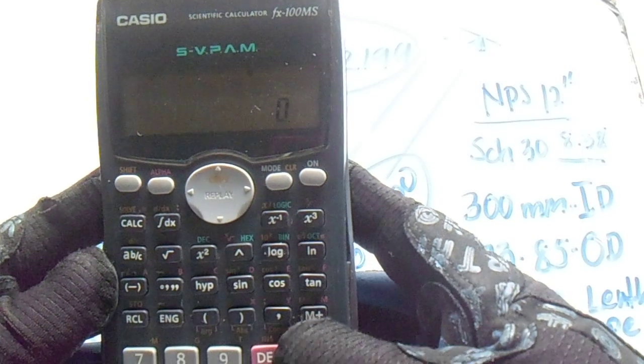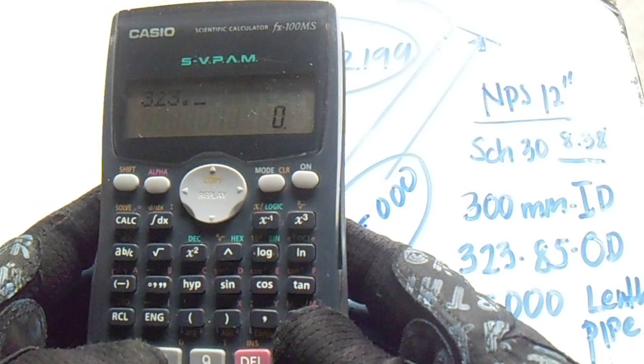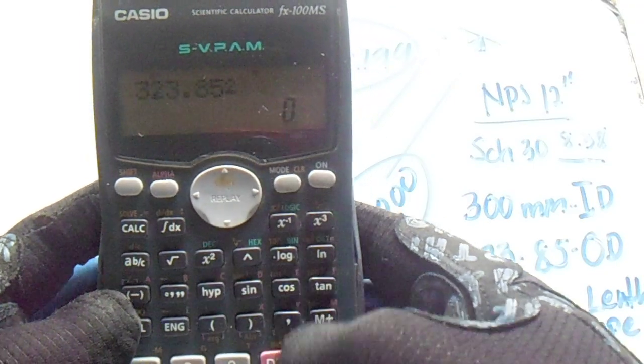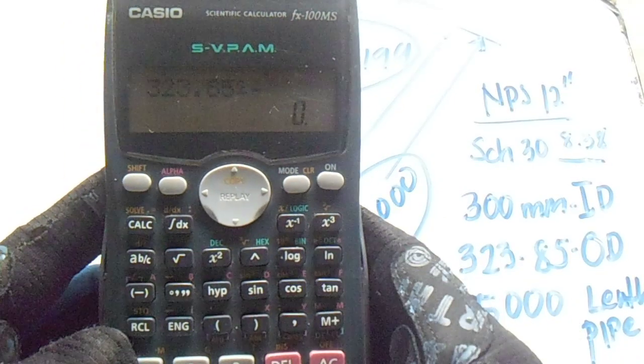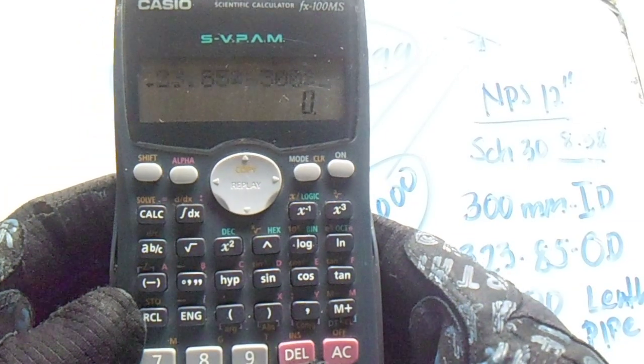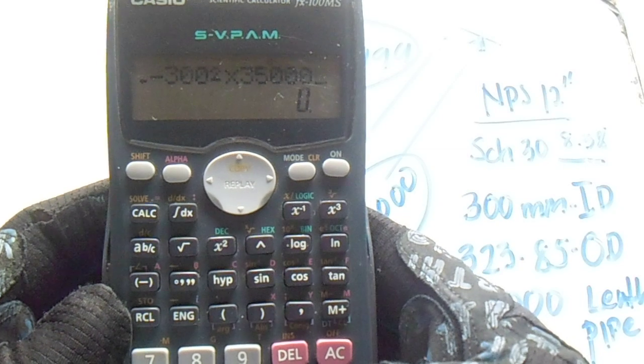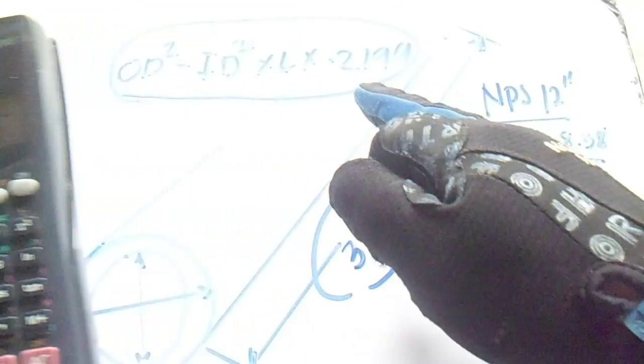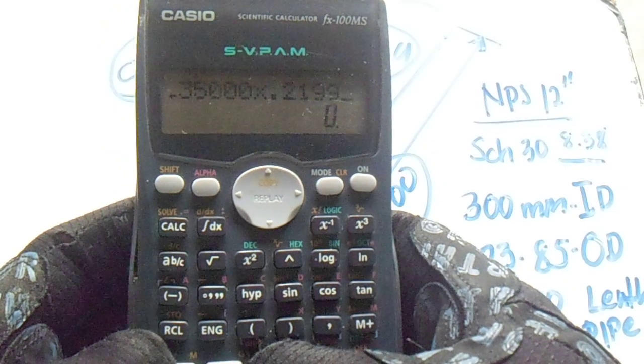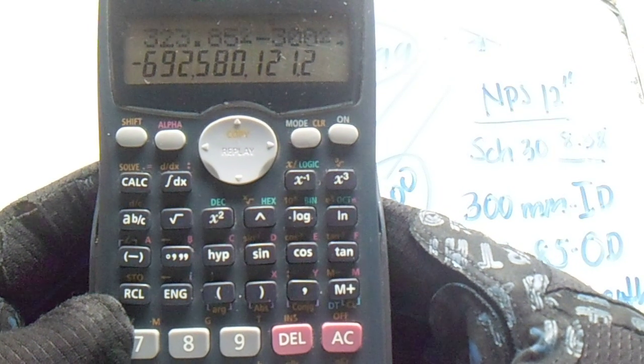We have outside diameter 323.85 squared, minus inside diameter 300 squared, multiply by length, multiply by constant 0.2199. The answer is 692.